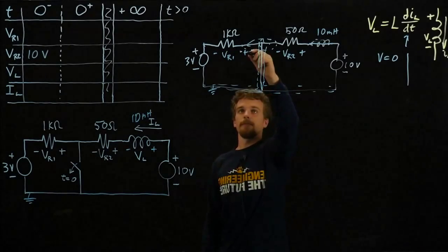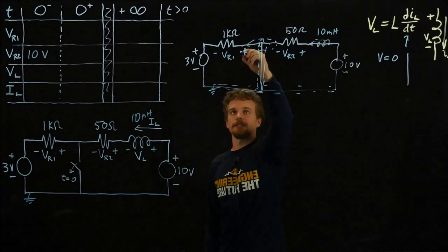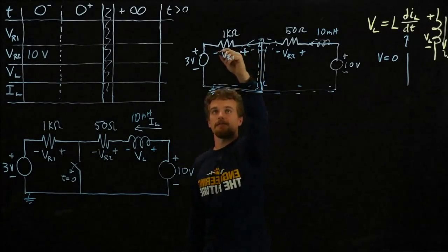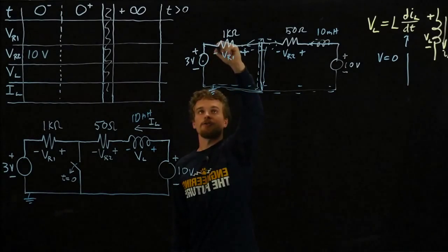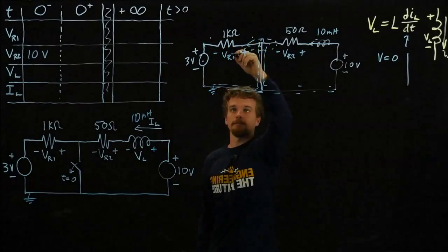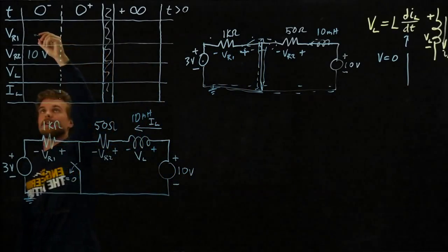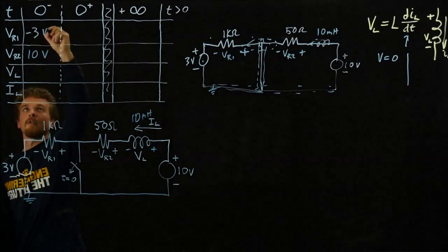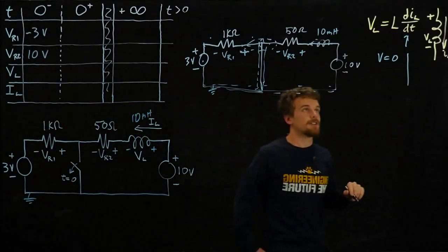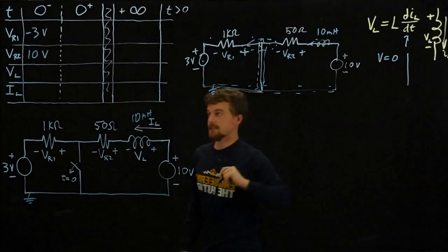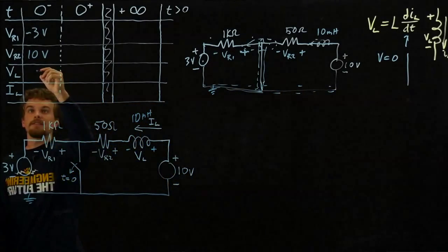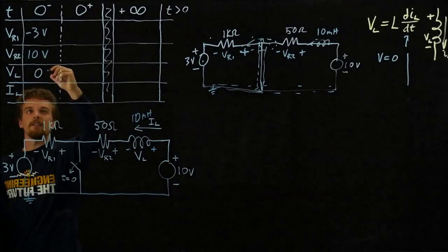The convention across this current is that if it drops 3 volts from here to there, we're going to have to call that minus, so this is minus 3 volts. We also just said that the voltage across the inductor, because it's in DC state, is zero volts.